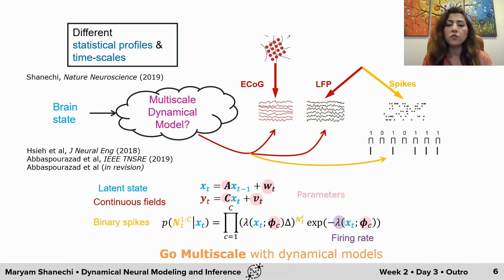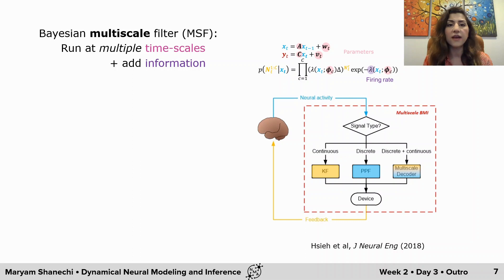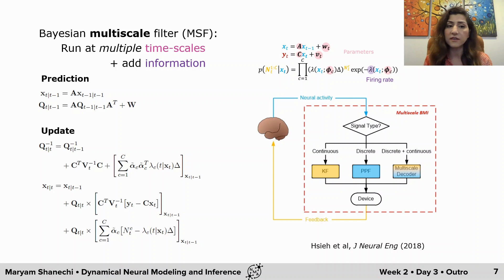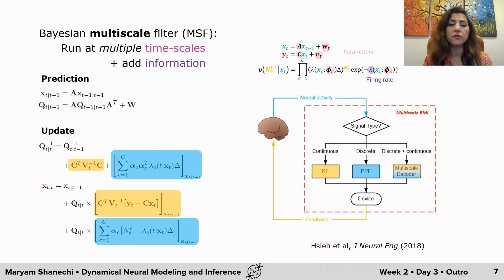We can't use a Kalman filter for state estimation here because we no longer have a linear state space model. So we developed a new multi-scale filter that runs at multiple timescales and adds information across scales. The prediction step is similar to the Kalman filter because our state equation is similar, but the difference is in the update step. This filter corrects its prediction not only based on the continuous signal observation, but also based on discrete or binary signal observation — that is precisely why it can aggregate information across scales.